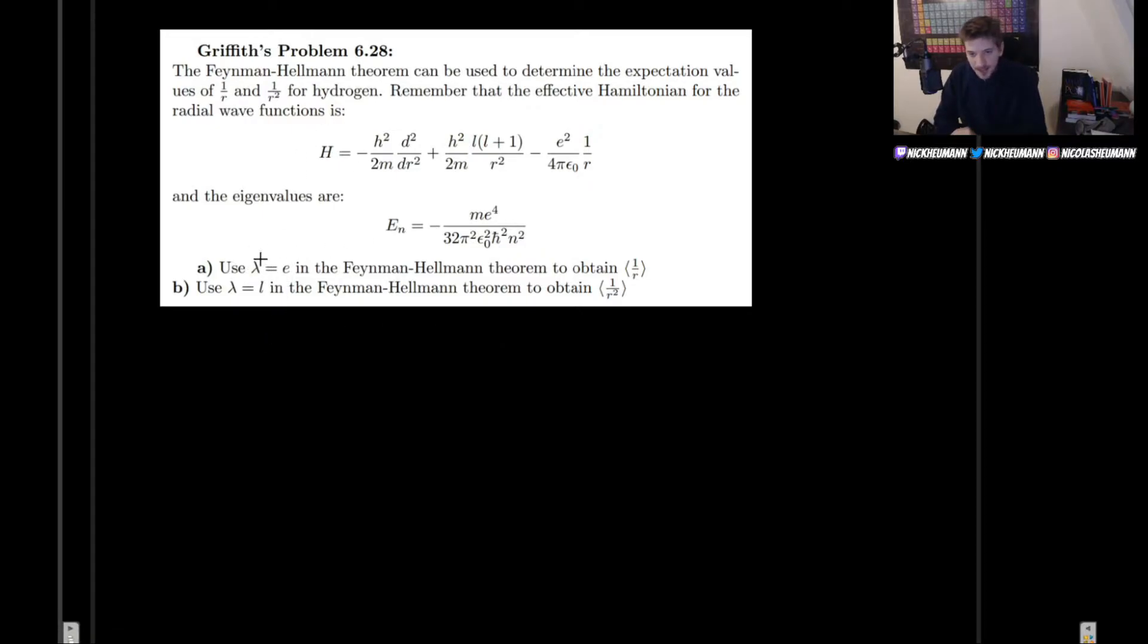Now, using the Feynman-Hellman theorem, but with the parameter to be e, the charge of the electron, then we will use that to obtain 1 over r. And why, how did we choose lambda equal e? Well, because we know that we want to find the expectation value of 1 over r, and we know that the Feynman-Hellman theorem tells us that the derivative with respect to our parameter of the energy is going to be equal to the expectation value of the derivative of the Hamiltonian with respect to the parameter.